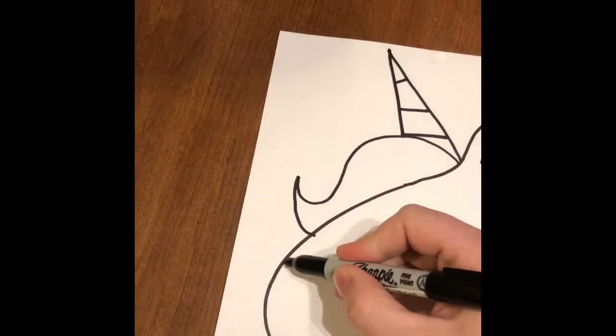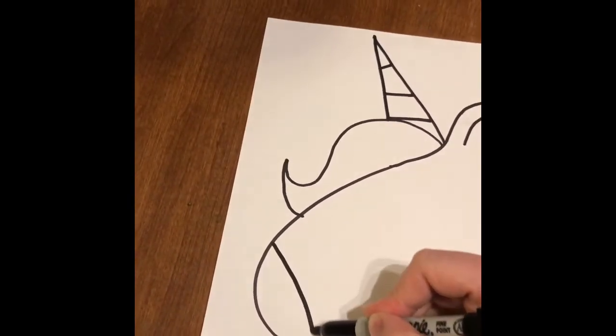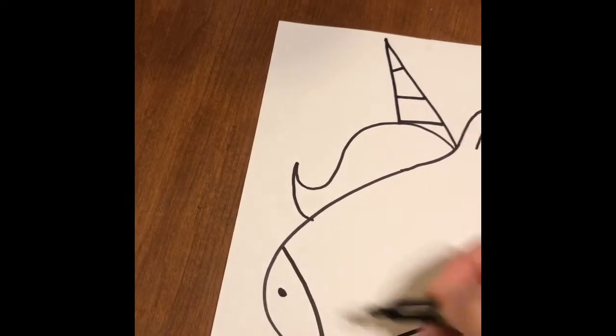Then I'm gonna add the front of the muzzle. So you're just gonna make a little curved line here for the nose and put a little nostril right there.